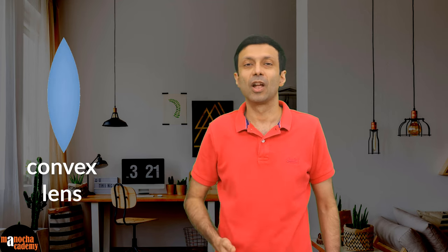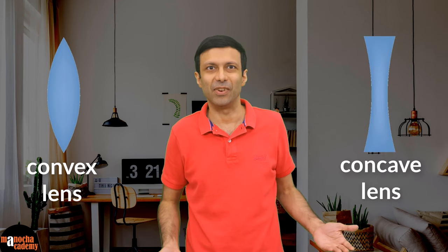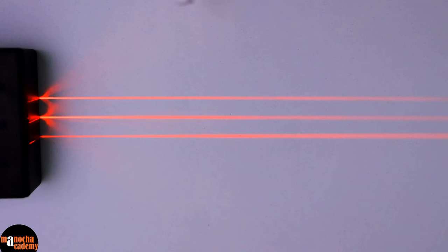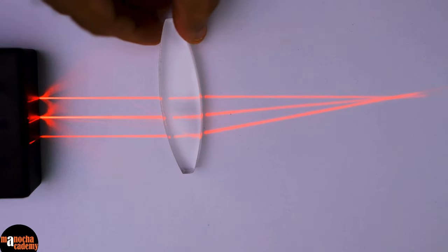As you know, there are two types of spherical lenses, convex lens and concave lens. Let's see how these lenses differ and what they do with light. We are going to start with the convex lens.